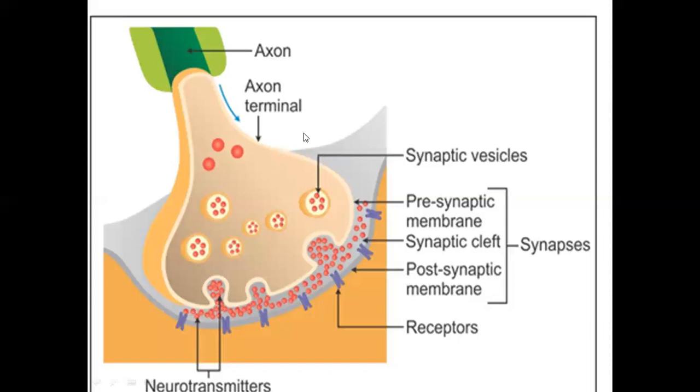Let's label this picture. This is the axon, which has a little myelin. This is the axon terminal, which contains synaptic vesicles. These synaptic vesicles contain neurotransmitters.